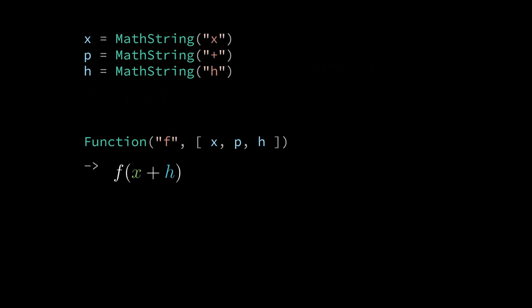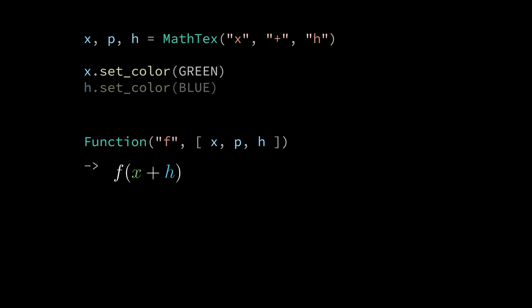Here we declare math strings for x plus and h which are then passed into a function component. To compress this notation we can obtain these math strings by unpacking a math text. Using these references we can set the color of x to green and we can set the color of h to blue.